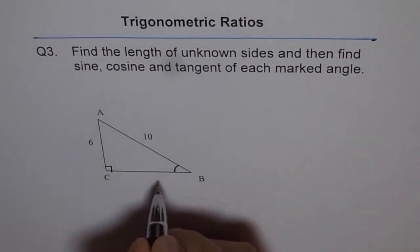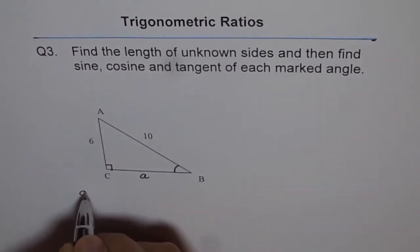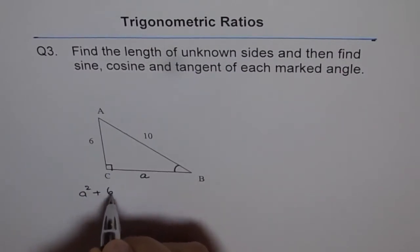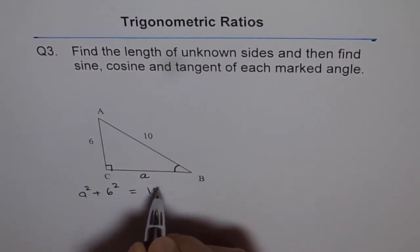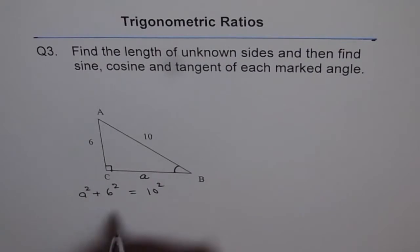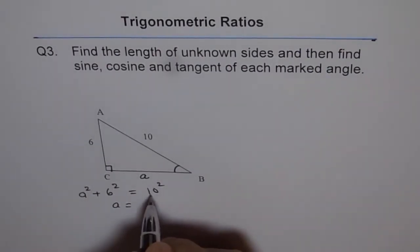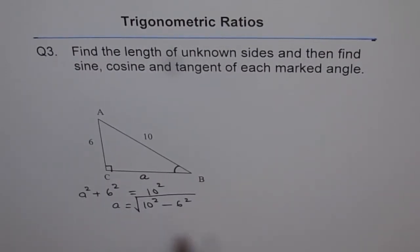Let's say the other side is side A. We know A² + 6² = 10². So from here, what is A equal to? A equals the square root of 10² minus 6². Let me first write that: A = √(10² - 6²) = √(100 - 36).